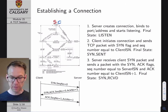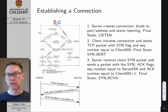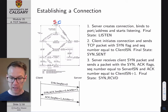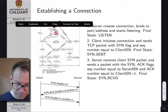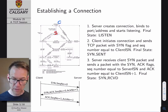The very first thing that happens is the server creates a connection, binds a port and address to that particular connection — its own IP address and whatever port number people should be connecting to. For example, if this was a web server application, the server would bind to port 80. Then it basically just sits there and starts listening for incoming connections, and makes the transition from the closed state to the listen state. That's step number one.